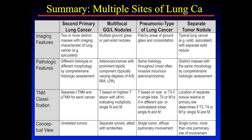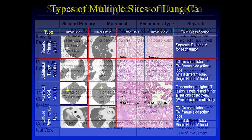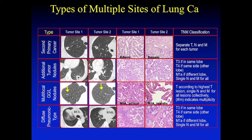We also spent a lot of time on an area of significant confusion: when patients have more than one site of disease in the lung, how do you classify that? We concluded there are really several different scenarios. It could be a second primary lung cancer, multifocal ground glass or lipidic lung cancer, a pneumonic type of lung cancer, or separate tumor nodules. There are definitions for these based on imaging features, pathologic features, and how to classify the TNM.